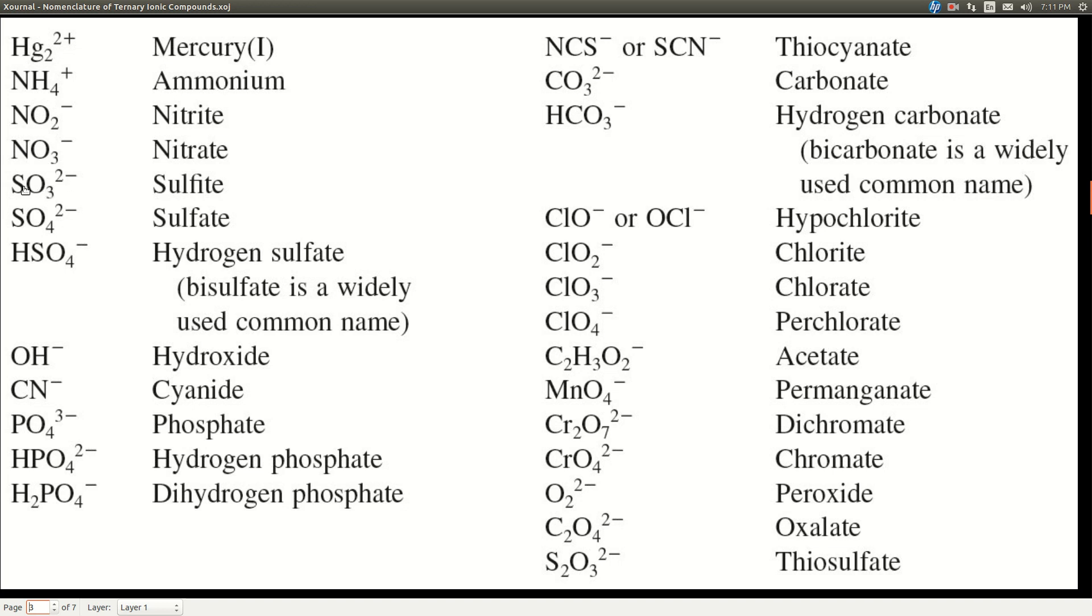So for instance, sulfite is SO3, has a negative 2 charge, and it's called sulfite. Watch out for the letters. I mean, one little letter makes a difference. Sulfite as opposed to sulfate, okay.